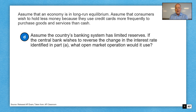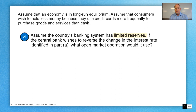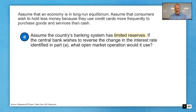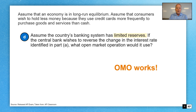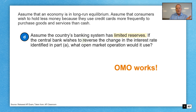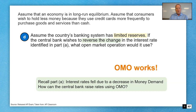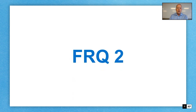On to part D. Assume the country's banking system has limited reserves. If the central bank wishes to reverse the change in interest rate identified in part A, what open market operation would it use? Because we have limited reserves, we automatically know that open market operations is effective. Anytime you see limited reserves in a prompt, jot down a note: OMO works. Interest rates fell because money demand decreased, and now we want to reverse that. The central bank would have to sell bonds — selling bonds, selling securities — that is your answer.